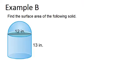In example B, it says find the surface area of the following solid. So what we have here is a cylinder. That's this bottom portion that has a height of 13, and its radius will be 6. And on top of that is a hemisphere. It's half of a sphere with a radius of 6.